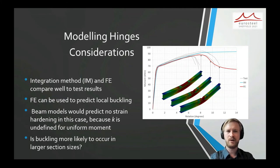FE analysis, however, is able to capture the buckling and this resulting drop in the curve. It's worth pointing out that for this four point bending problem, the beam model wouldn't actually predict any strain hardening. And this is because the value of H is undefined for the uniform moment across the centre.